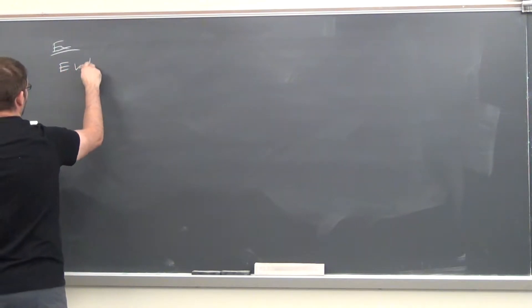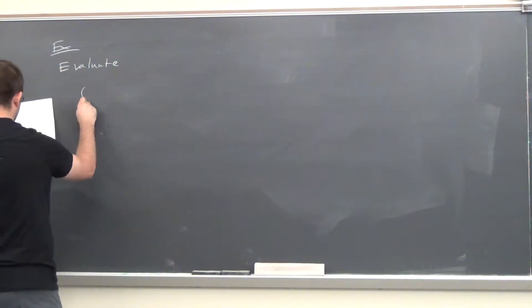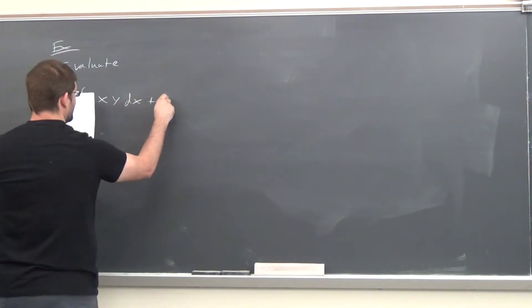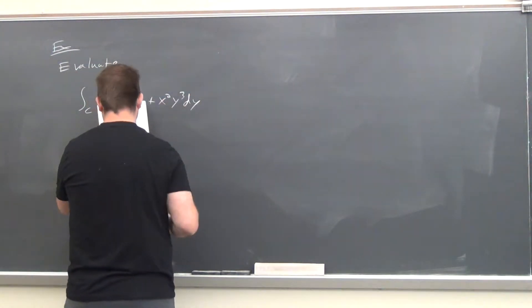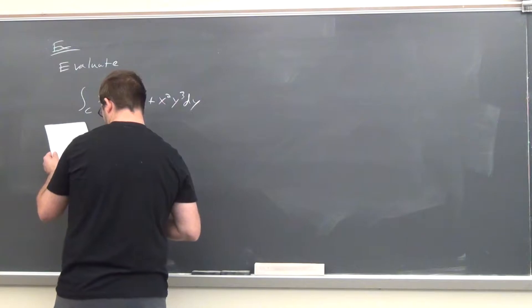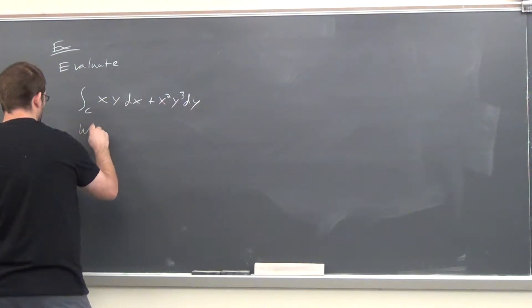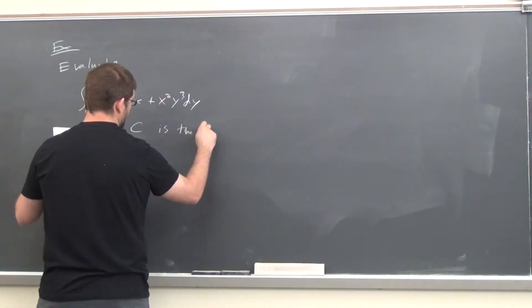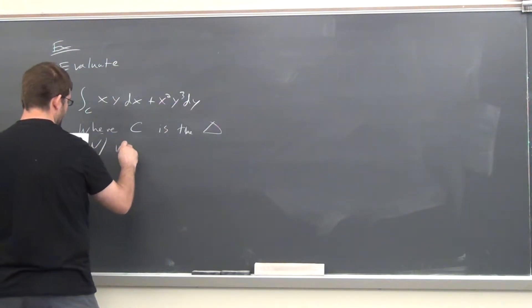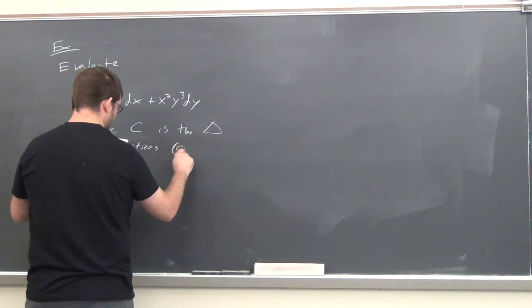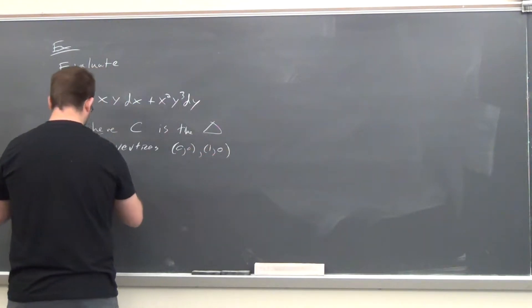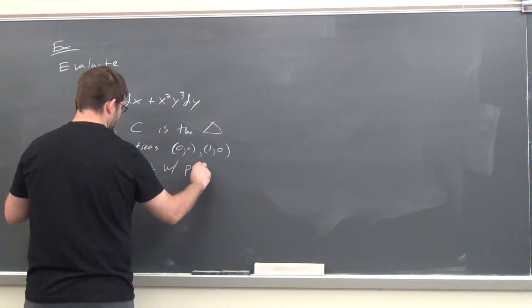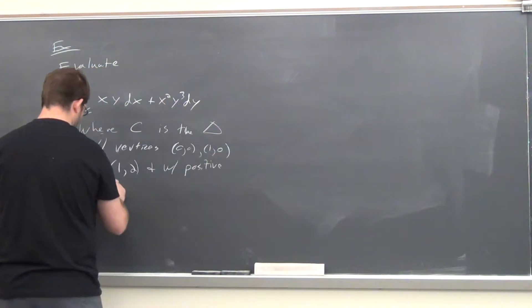This should be a pretty straightforward use of Green's theorem. Find the integral of x·y dx plus x² y³ dy, where C is the triangle with vertices (0,0), (1,0), and (1,2), with positive orientation.